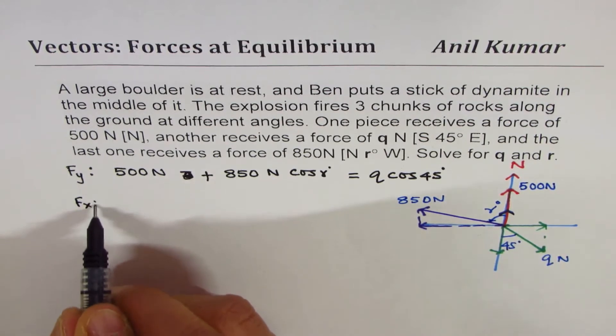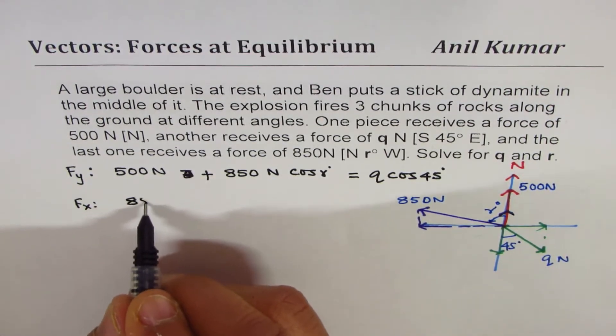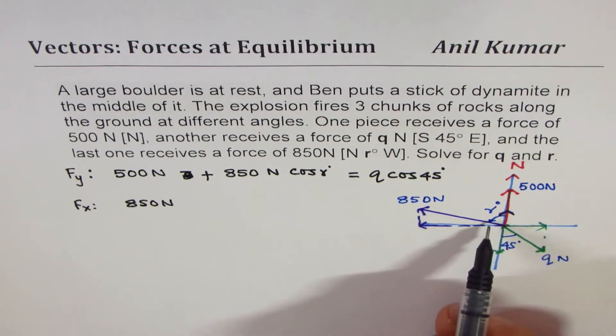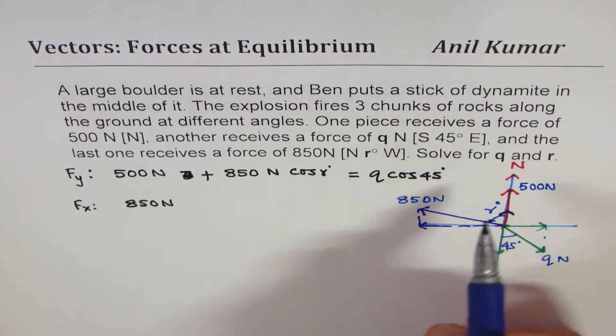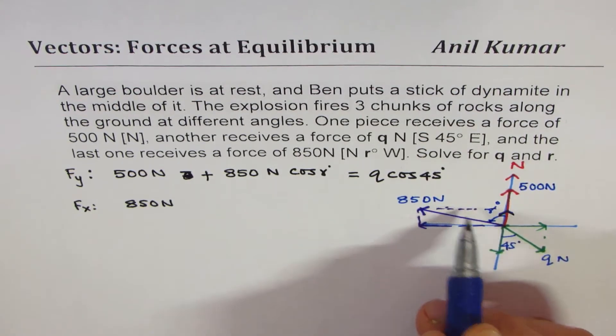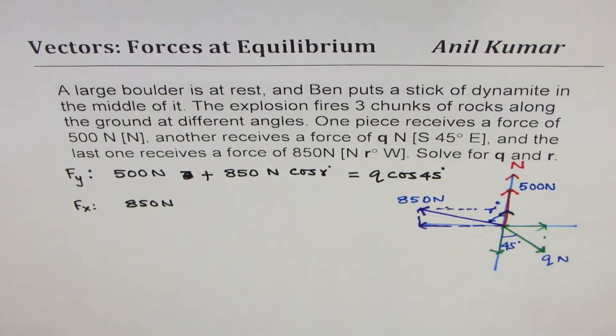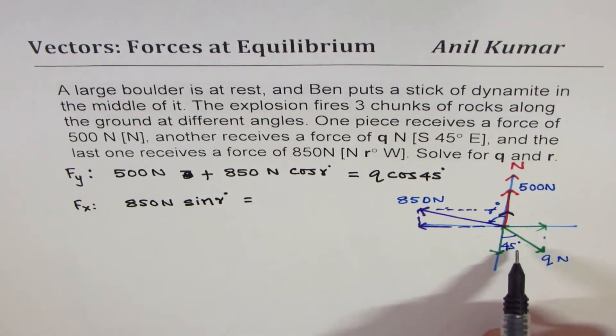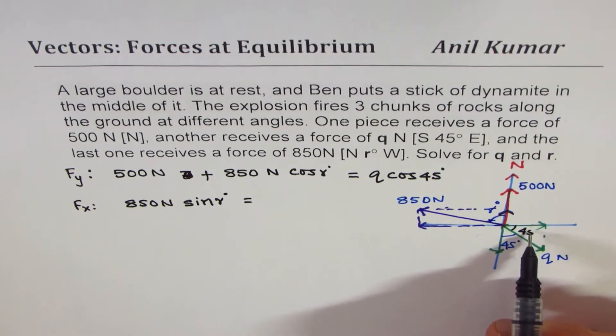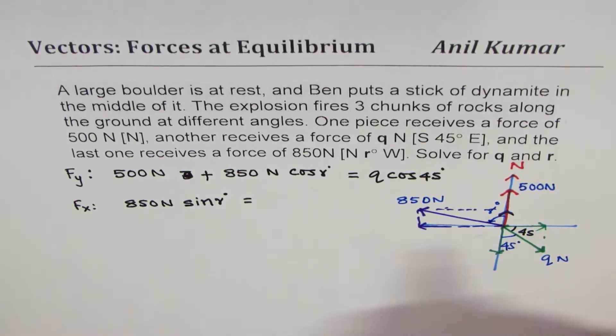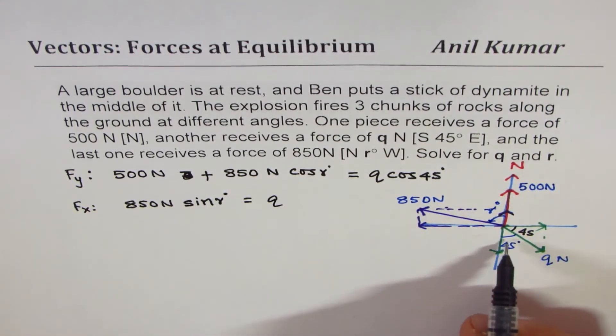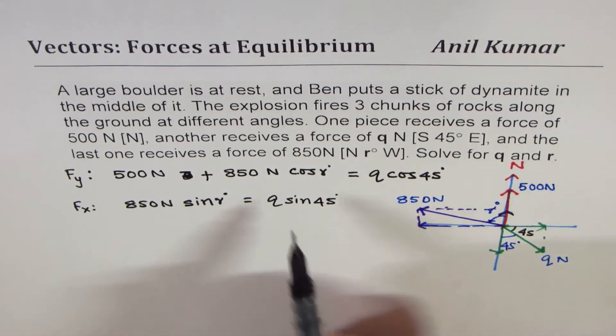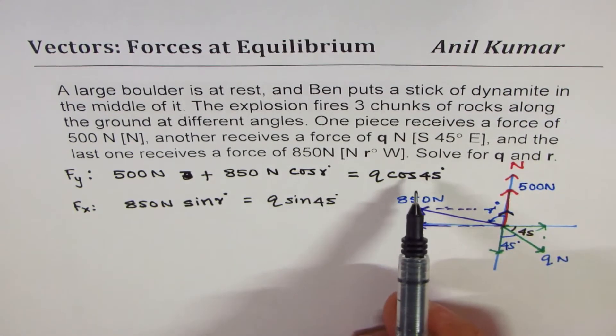Now, as far as the x components are concerned, we have one x component, which is 850 newtons. All these are in newtons. Now, this component here, since that is opposite to r degrees, will be sine theta. Sine r should be equal to q sine 45. This angle is also 45, or you can say q cos 45, either way. Both are same.